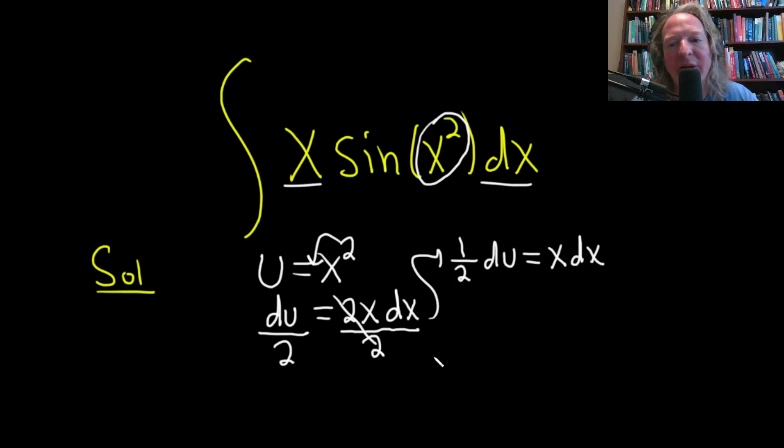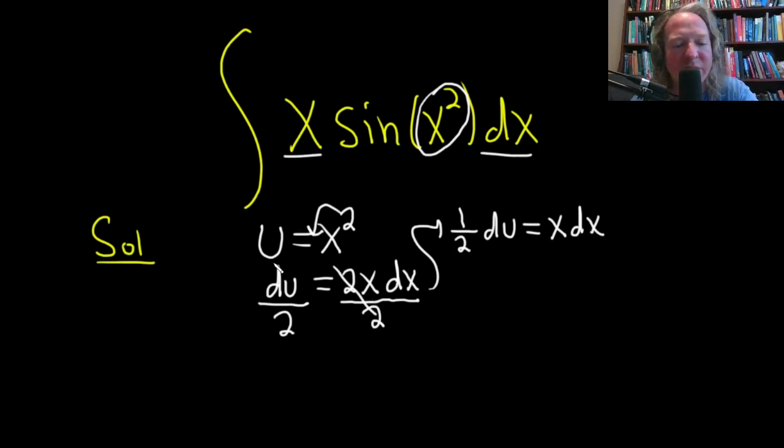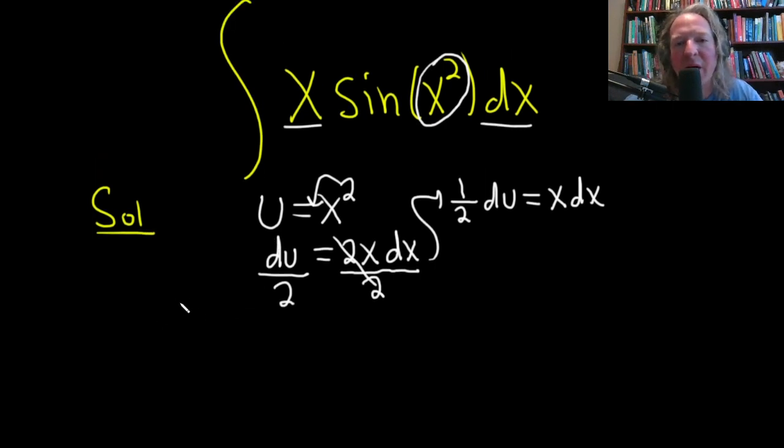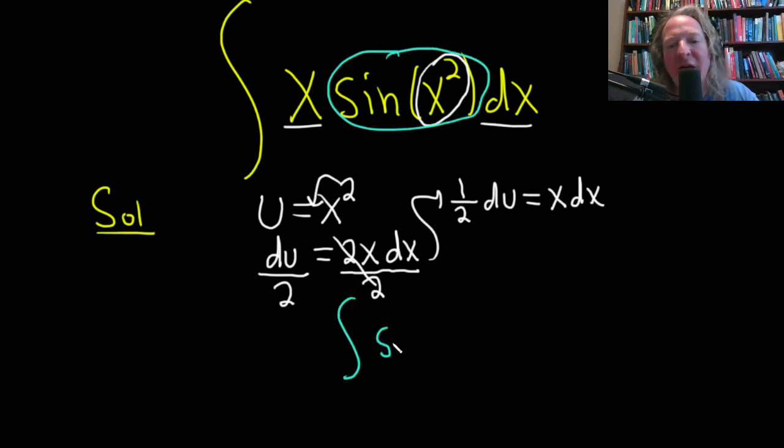Very nice. All right, let's go ahead and do our substitution. I'm going to switch colors here. So our sine of x squared, that's going to be sine of u, right, because we know u is equal to x squared, so just basically putting a u there where the x squared is.